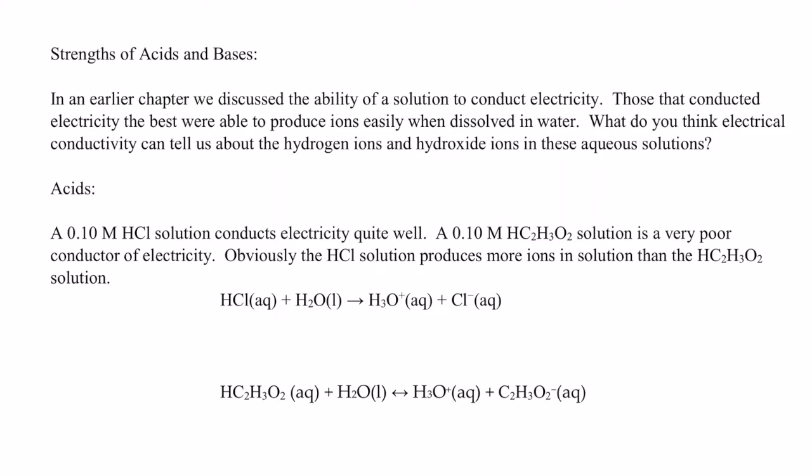Not too long ago, we talked about the ability of a solution to conduct an electric current. Those that conduct electricity the best, if you remember, were able to produce lots of ions when dissolved in water. And as a result, we called them electrolytes because they could conduct electricity when those solutes produced lots of ions when dissolved in water. Well, what do you think about the electrical conductivity and what it can tell us about the number of hydrogen ions and hydroxide ions in acids and bases when dissolved in water?